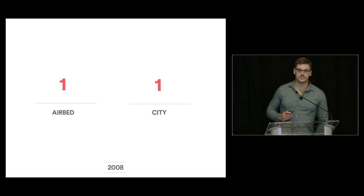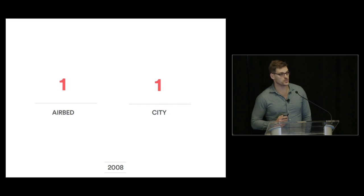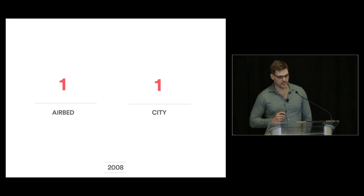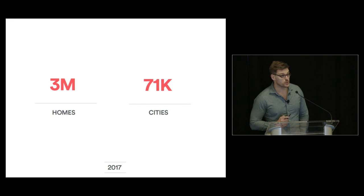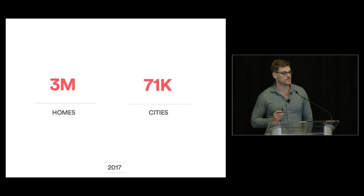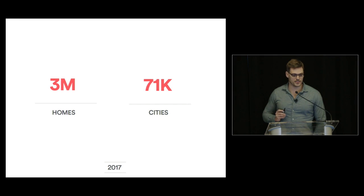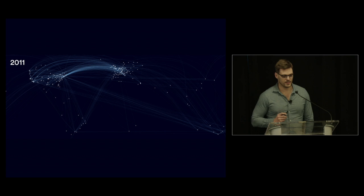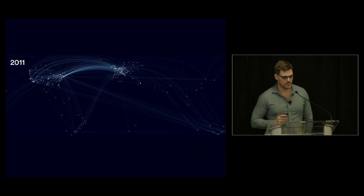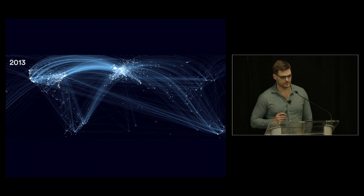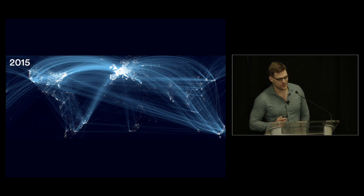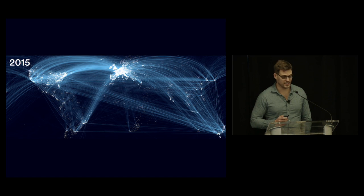This all started in 2008 with one airbed. The original name of Airbnb was Air Bed and Breakfast — only airbeds were allowed in one city. And today we have over 3 million homes in over 71,000 cities, so this growth has been huge. Let's take a look at this ggplot visualization I made — this is Airbnb in 2011, and by 2015 basically the entire map was covered.